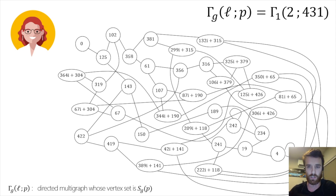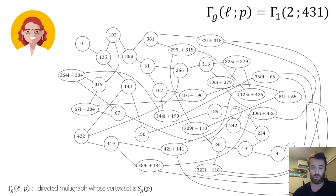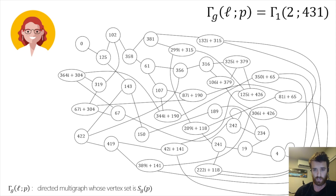The notation used throughout the talk is Γ_G(L; p): the graph of supersingular abelian varieties of dimension G over characteristic p, where L is the small prime determining the edges. For the toy example, we fix genus 1, p = 431, and Alice works with L = 2, giving 3 two-isogenies starting from any given isomorphism class.